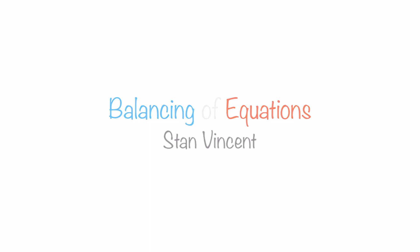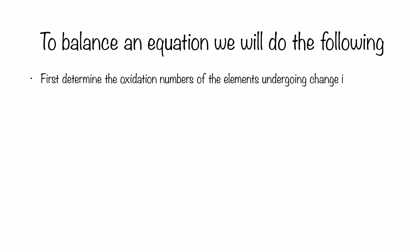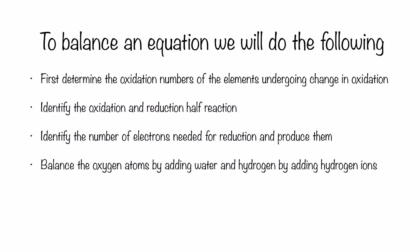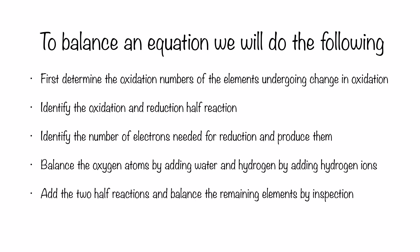Today we are going to balance an equation in acidic medium using the oxidation number method. In order to balance an equation, we will need to: first, determine the oxidation numbers of elements undergoing change; identify the oxidation and reduction half reactions; identify the number of electrons needed for reduction and produce them; balance the oxygen atoms by adding water molecules and hydrogen atoms by adding hydrogen ions in acidic medium; then add the two half reactions to get the final equation.